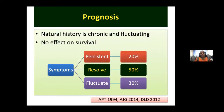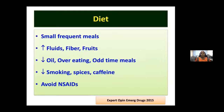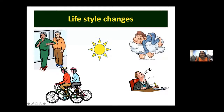The natural history of functional dyspepsia is chronic and fluctuating with no effect on survival. Symptoms are persistent in about 20 percent, resolve in about 50 percent, and fluctuate in about 30 percent — so 70 percent will have an up-and-down course. Dietary advice: small frequent meals, increased fluid, fiber, and fruits; decreased oil; avoid overeating especially at night; avoid skipping meals and breakfast; stop smoking; decrease spices and caffeine; increase physical activity and improve sleep.